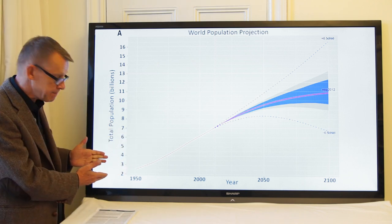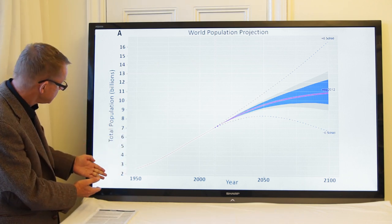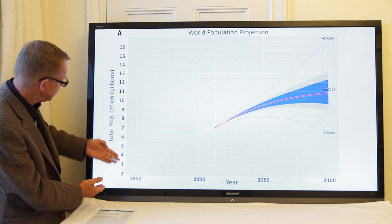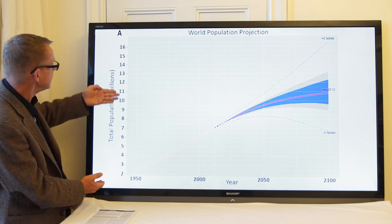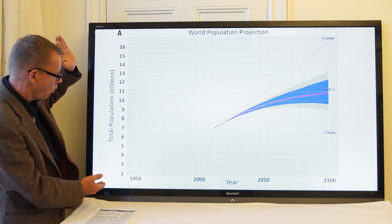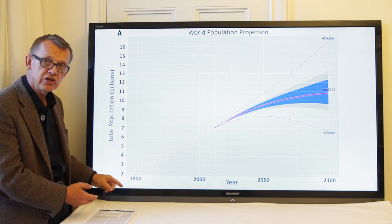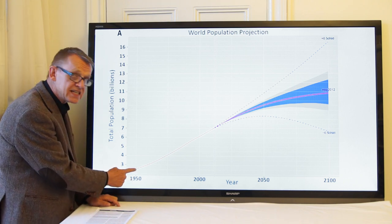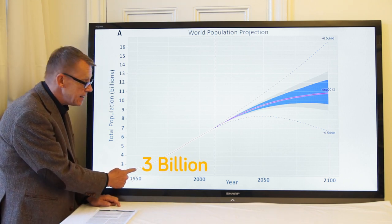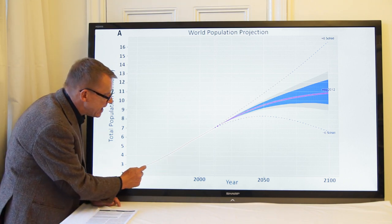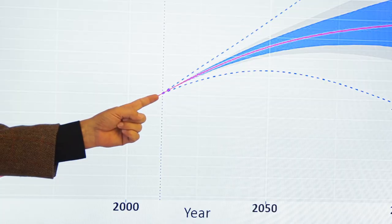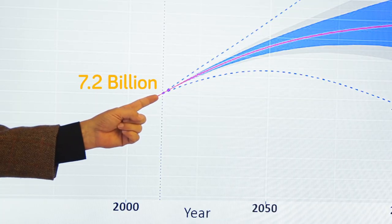This is a graph from that paper. It shows the total world population in billions, from two billions to ten billions or even more. Here, the years, starting 1950, with less than 3 billion, and their estimate of past population went up to 7.2 billion today, 2014.